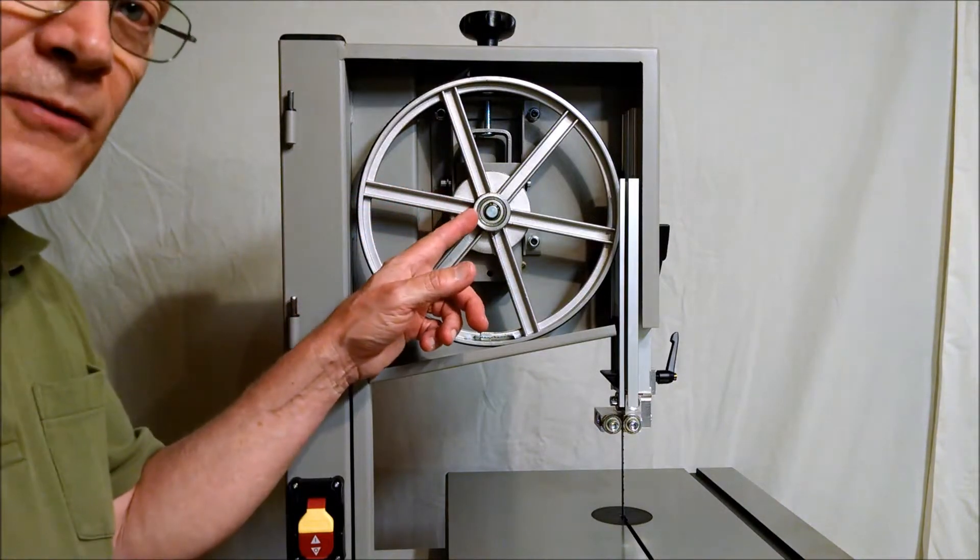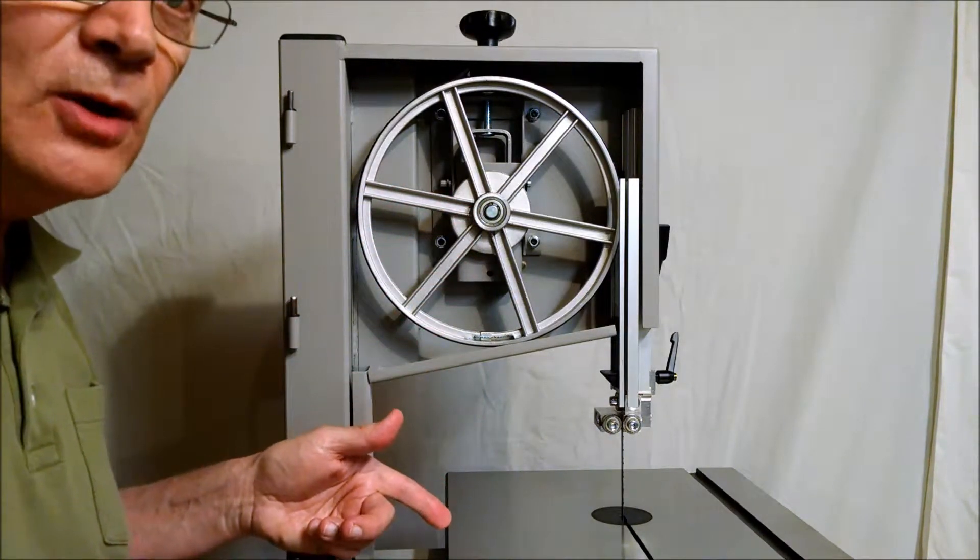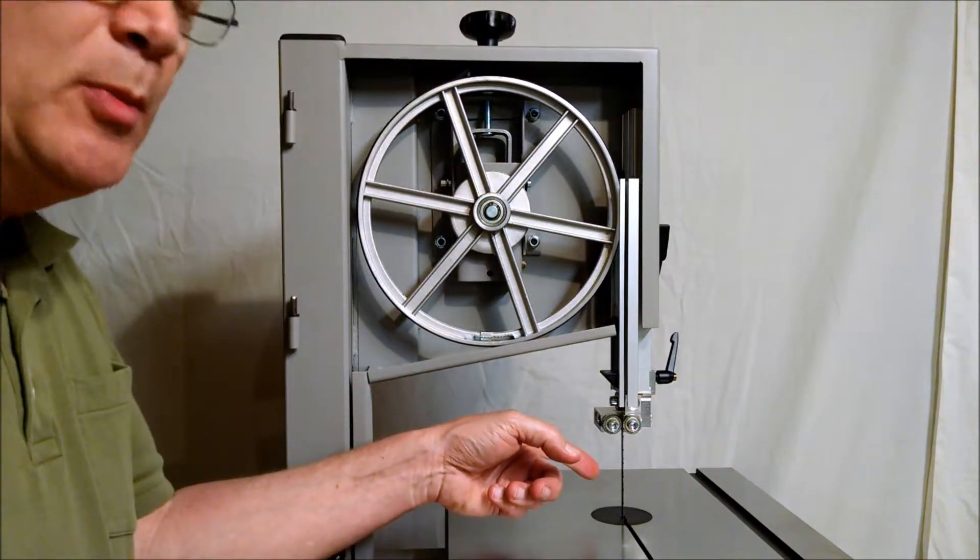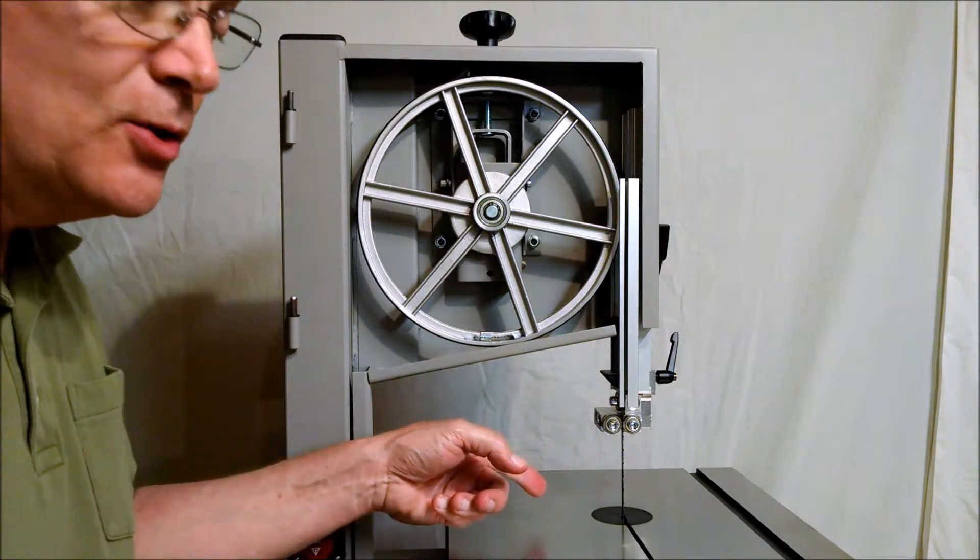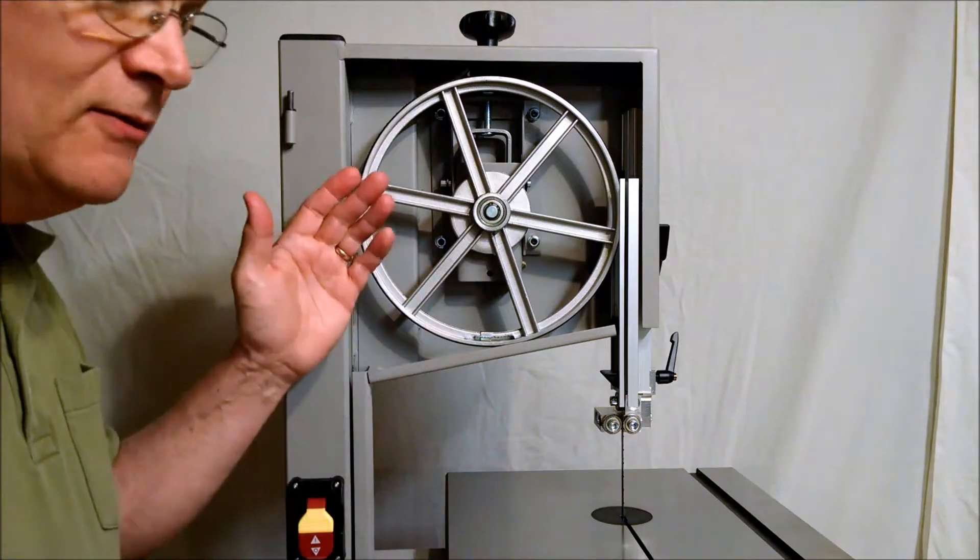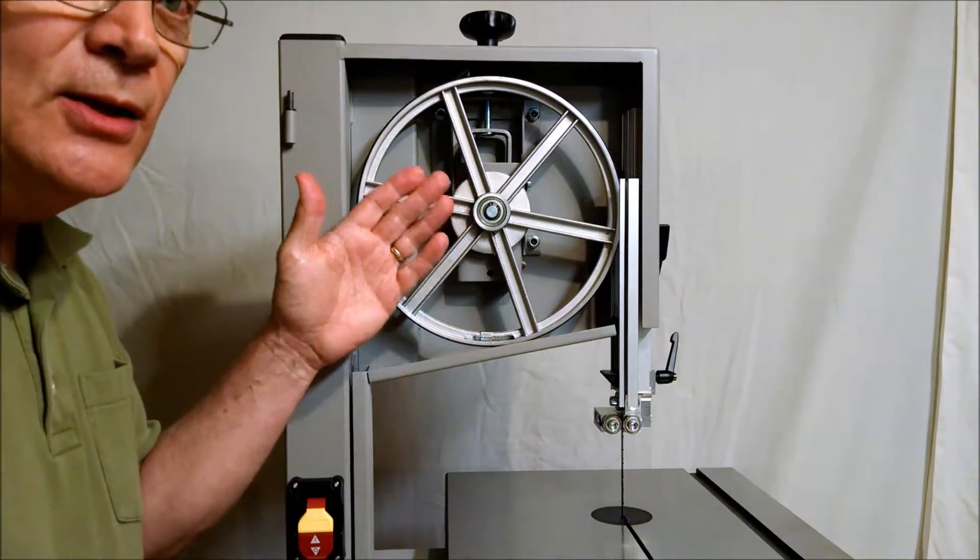If the center of your upper wheel is directly above the center of your lower wheel, then the blade will be perpendicular, that is, 90 degrees to the table. If neither wheel could move sideways, you'd be good.